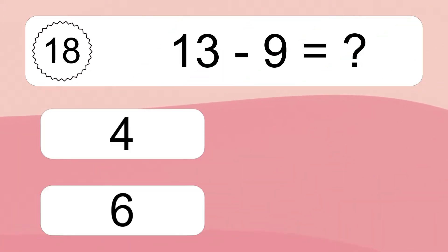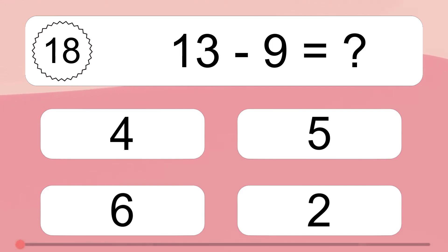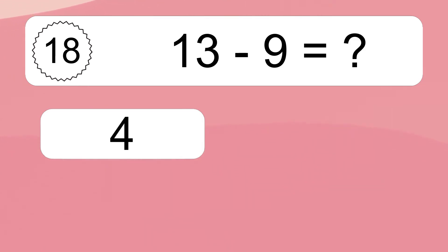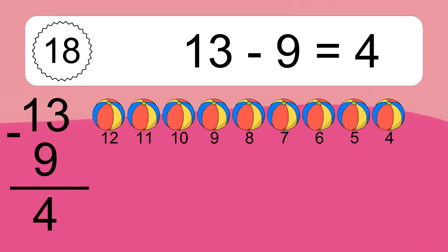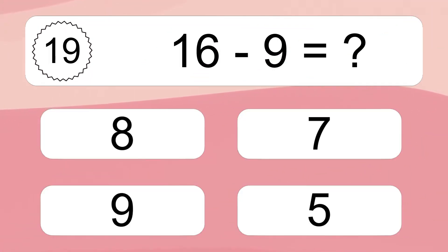13 minus 9 equals what? 13 minus 9 equals 4. Let's count it: 12, 11, 10, 9, 8, 7, 6, 5, 4.